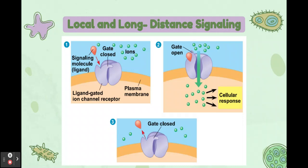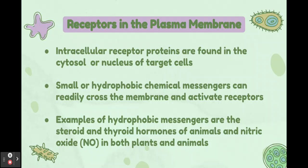When the ligand dissociates from the receptor, the gate closes and ions no longer enter the cell.